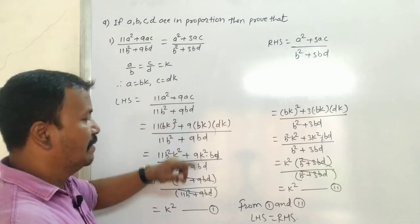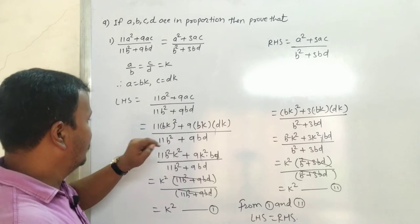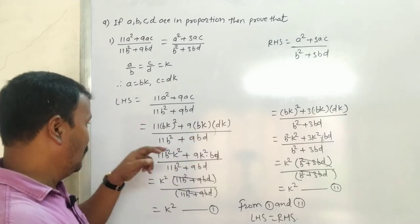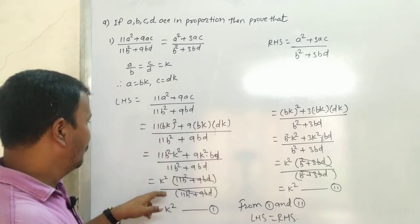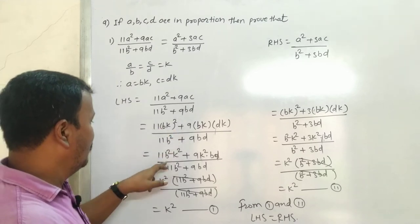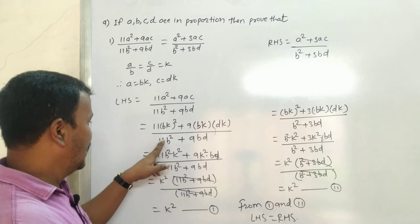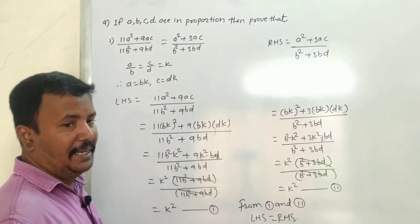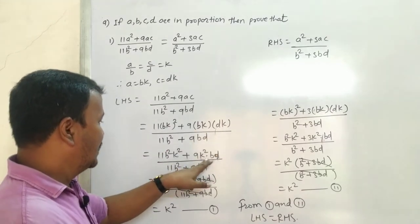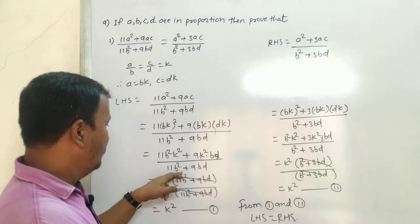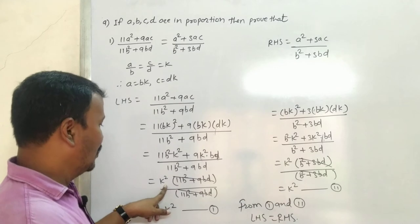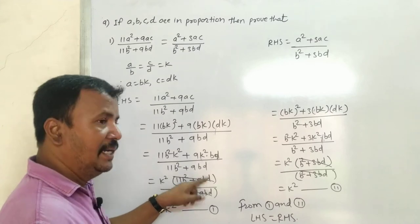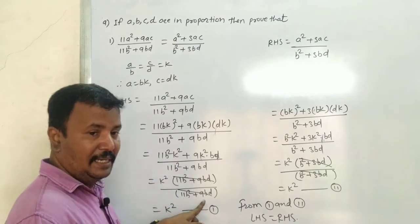Substituting a = bk and c = dk: a² means (bk)² and 9ac means 9·(bk)·(dk), upon 11b² + 9bd. This gives 11b²k² + 9k²·b·d upon 11b² + 9bd. Taking k² common from numerator: k²(11b² + 9bd) / (11b² + 9bd), which cancels to give k².